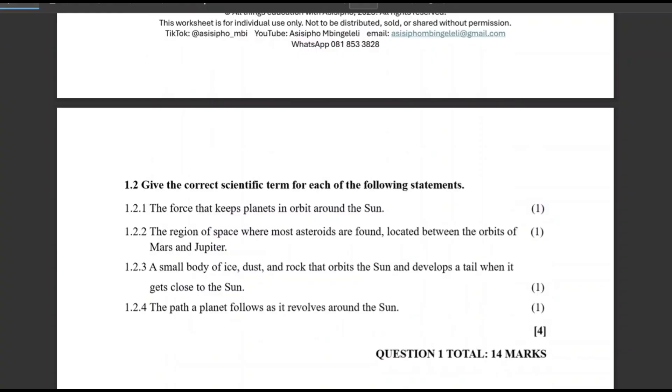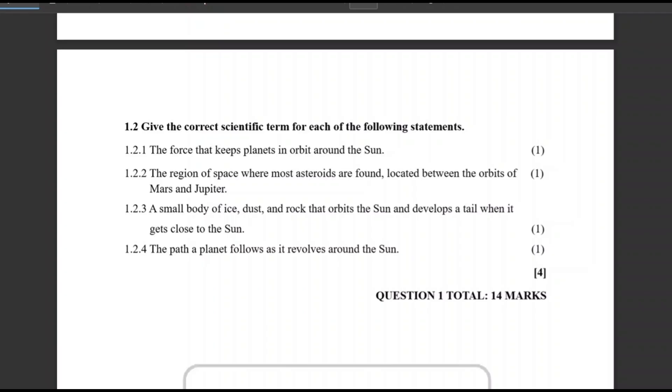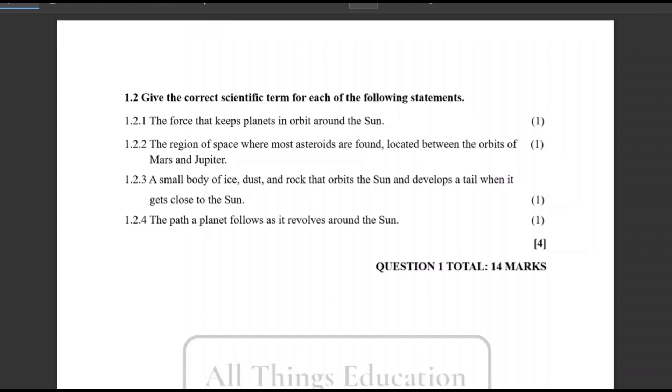Then we move to 1.2. Give the correct scientific term for each of the following statements. The force that keeps planets in orbit around the sun. We are asked about the force that is gravitational force, or you can say gravity. Then 1.2.2, the region of space where most asteroids are found located between the orbits of Mars and Jupiter. What is that region of space? It's a very famous one. Asteroid belt. Please make sure to practice the correct spelling for this one. I hope you're also answering the questions with me.